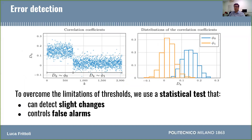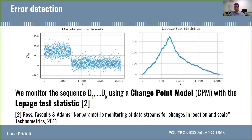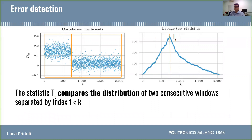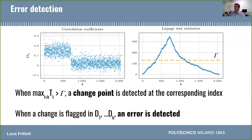Due to the drawbacks of using thresholds, we employ in our error detection strategy a statistical change detection test, which is able to detect slight changes so that the overlap between the distributions will not be a problem. It also allows us to control the false alarm probability, which is very important. In particular, we use a change point model, or CPM, to monitor the distinguisher sequence. This test uses a statistic to compare the distributions of two consecutive windows within the sequence. The test tries all possible partitionings within the sequence, and since the statistic is higher when the two distributions in the two windows are more different from each other, a change will be detected when the maximum value of the statistic exceeds a certain threshold.